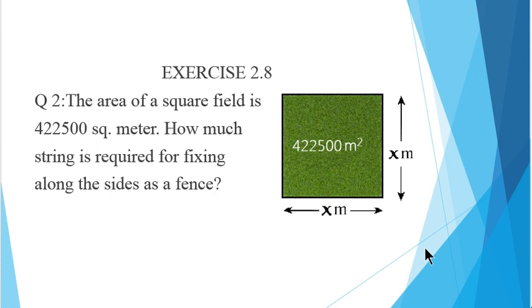Now, first of all, we have to find out the one side of a square. And after that, we have to find out the length of the string which is required to cover all the four sides of a square field. So, moving to our solution.